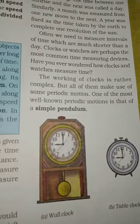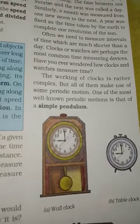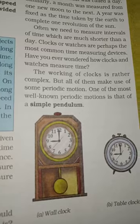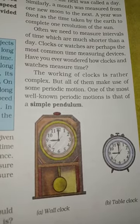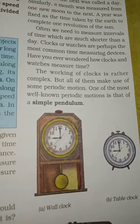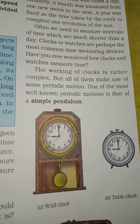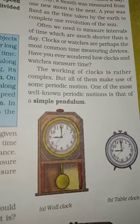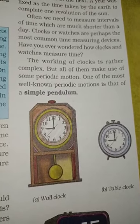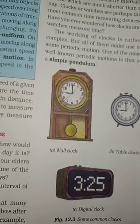We need to measure intervals of time which are much shorter than a day. The most common time-measuring devices are clocks and watches. The working of a clock is rather complex, but all of them use the same periodic motion. One of the most well-known periodic motions is that of a simple pendulum — used in wall clocks, table clocks, and digital clocks.